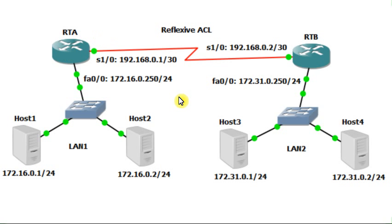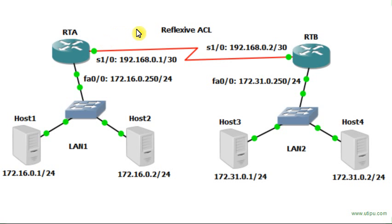We are going to establish two different named extended access lists. The first one will be the outbound filter — it will control the outgoing packets from RTA to RTB. The second one will be the inbound filter — it will control packets from RTB to RTA.